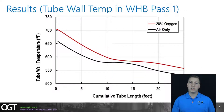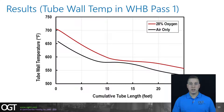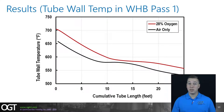This graph shows two curves illustrating how the tube wall temperature varies along the length of the boiler tubes for both the air-only base case and the intended change of 28% oxygen enrichment. It's clear that there is a fairly significant difference between the two cases, especially at the front end of the waste heat boiler at the critical tube-to-tube-sheet joint — the point of maximum tube wall temperature. Even the base case air-only operation is running slightly elevated above the recommended 650°F or 343°C maximum, and this problem is only compounded by the addition of even a small amount of oxygen enrichment.